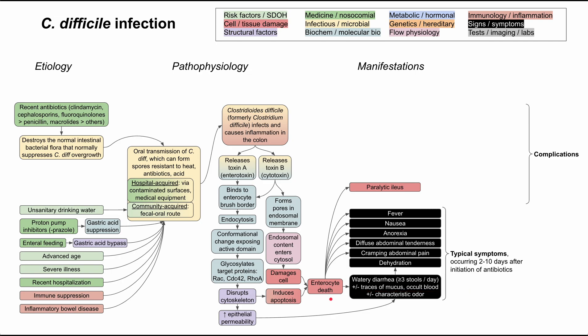If C. diff goes untreated or the case is particularly severe, complications can develop. Enterocyte death in the gut can cause paralytic ileus, leading to new symptoms including constipation, abdominal distension, and diffuse tympani on percussion. If your gut is no longer doing peristalsis and no longer pushing things forward, you won't have output from the GI tract, and things will start to back up, leading to abdominal distension.